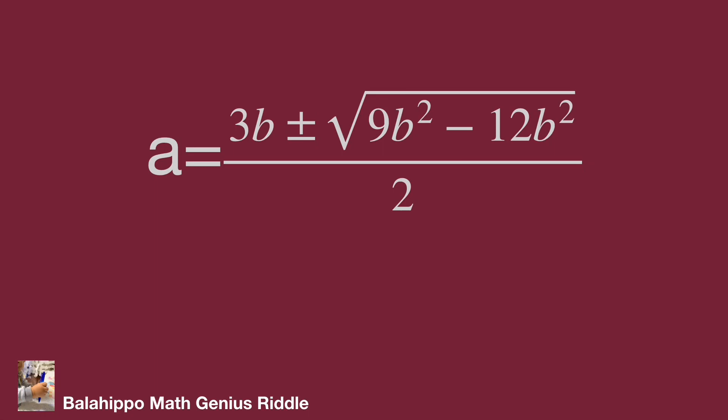To make a and b integers, the value of the square root should be an integer too. Therefore, b value equals 0. So a equals 0, that's the value we get from the second approach.